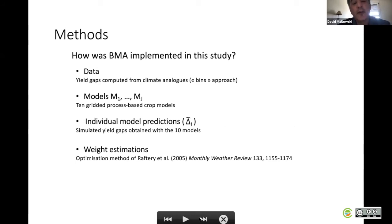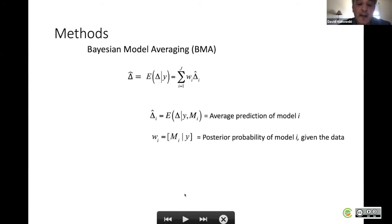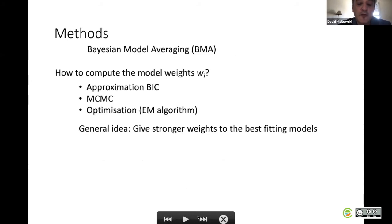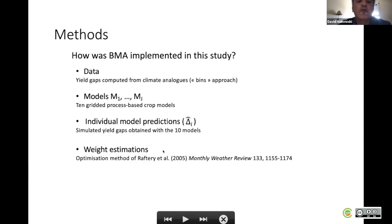How was the BMA implemented in this study? The data used to compute the weight were the yield gaps computed from the climate analogues. The yield gaps estimated from the first approach were considered as data. The models correspond to the yield gaps simulated by the 10 gridded process-based models.